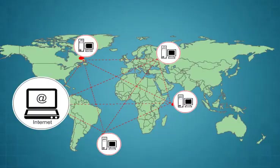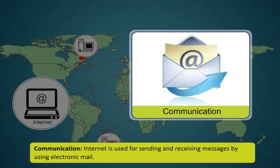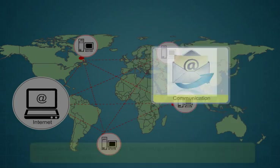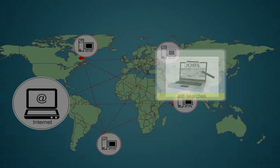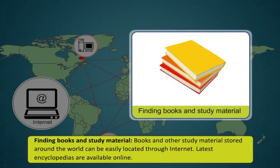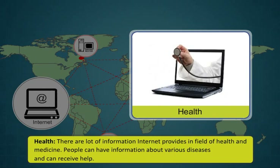Few of them are: In matters of communication, the internet is used for sending and receiving messages by using electronic mail. Internet helps in getting information regarding availability of jobs in different sectors and areas. People can publish their resume online for prospective jobs. Books and other study material stored around the world can be easily located through the internet. Latest encyclopedias are available online. There are a lot of information the internet provides in the field of health and medicine.